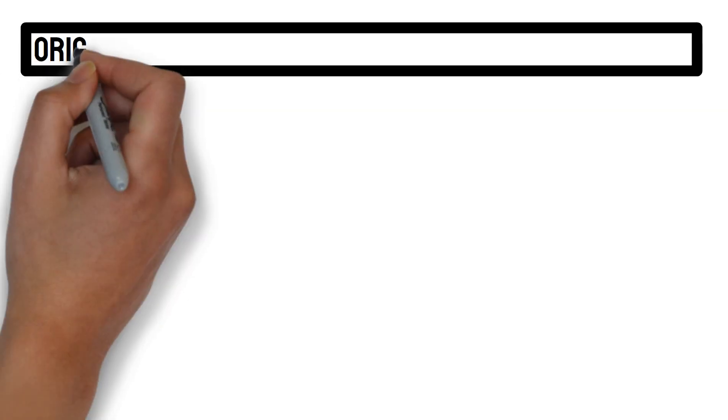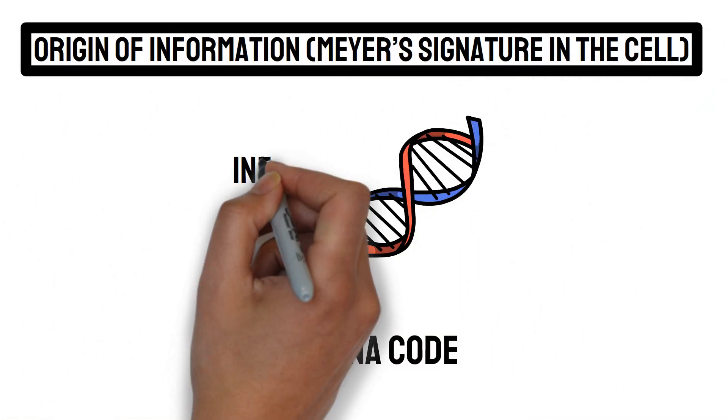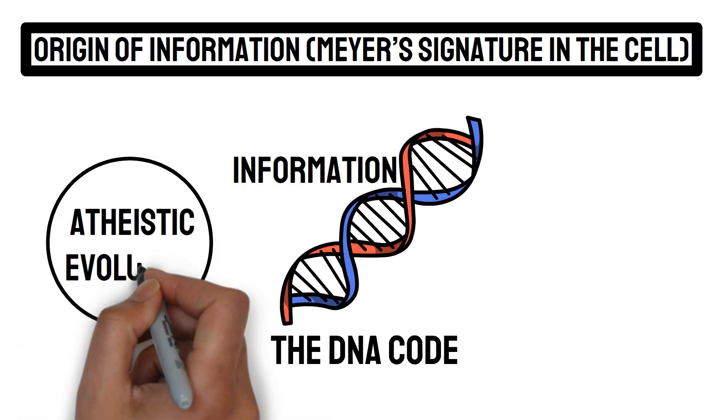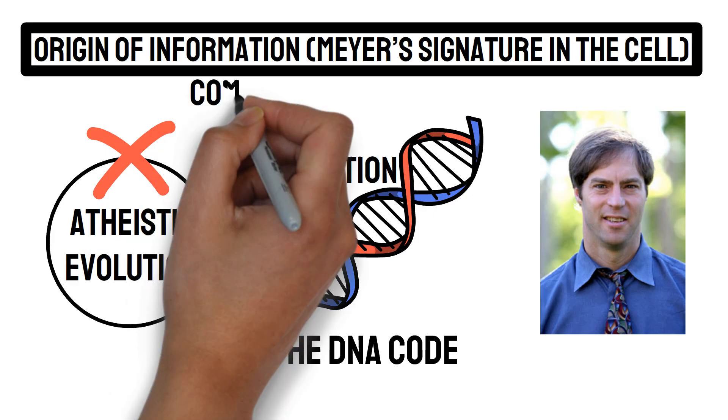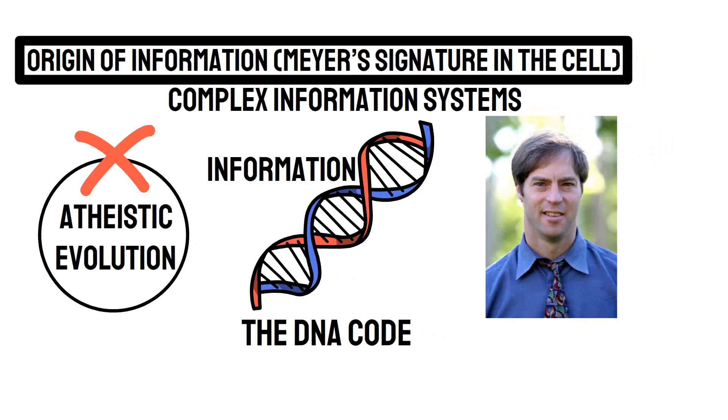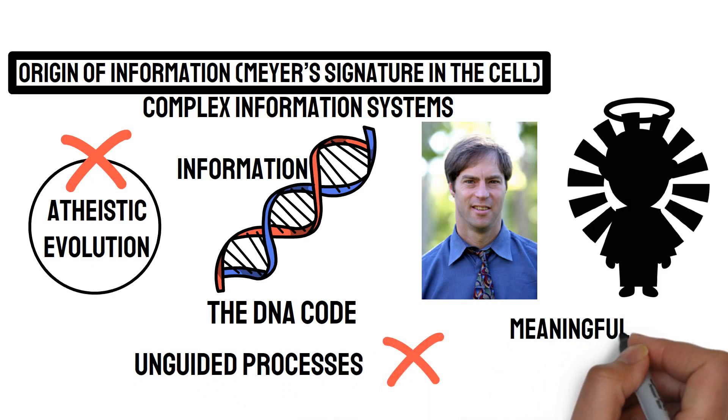And of course, there is origin of information. The DNA code contains a vast amount of information, which atheistic evolution cannot explain. Dr. Stephen Meyer argues that the origin of complex information systems requires a designer, as unguided processes cannot produce meaningful, organized information.